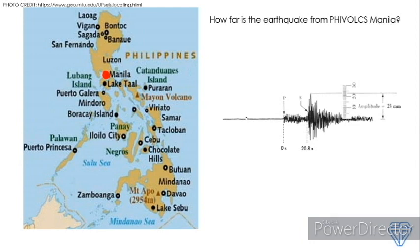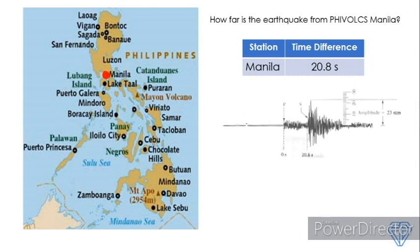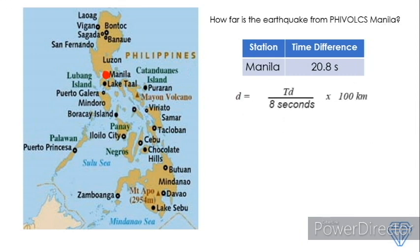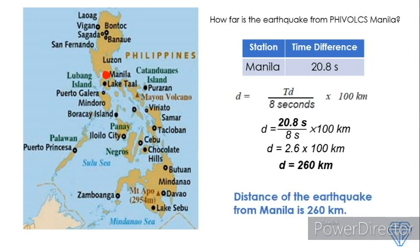The seismogram will give you the seismic waves, specifically the difference between the P wave and the S wave. In this case, we have 20.8 seconds as the time difference, so Station Manila reports a time difference of 20.8 seconds. We use the formula D = (TD / 8 seconds) × 100 kilometers, where TD is the time difference. Substituting 20.8 seconds: D = (20.8 / 8) × 100 = 2.6 × 100 = 260 kilometers. Therefore, the distance of the earthquake from Manila is 260 kilometers.